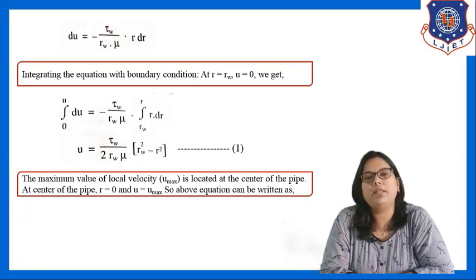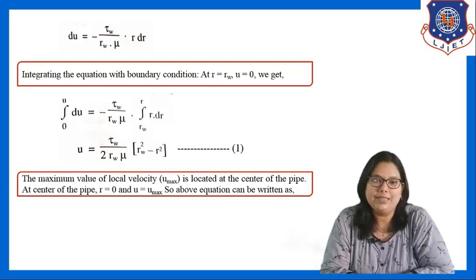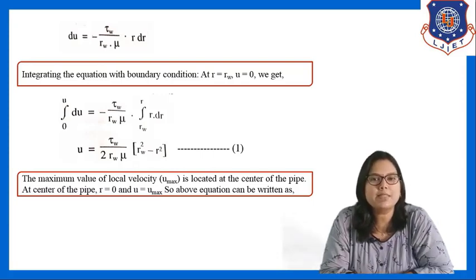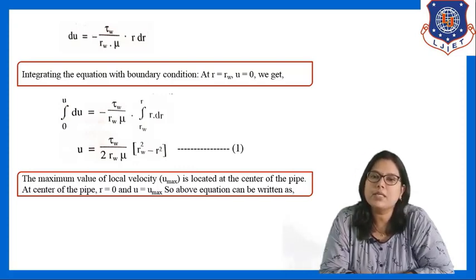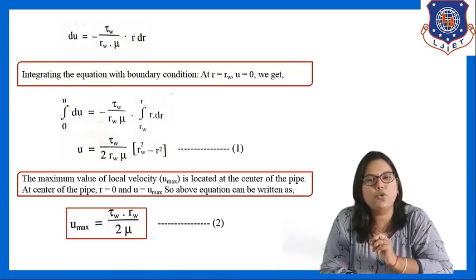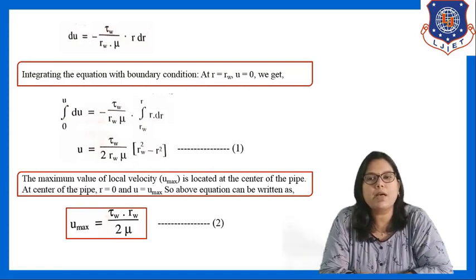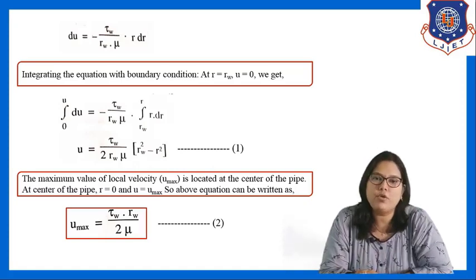For maximum velocity u_max, the velocity is maximum at the centre where r = 0. So at r = 0, u = u_max. Substituting r = 0 into equation 1, the term r² vanishes and one r_w cancels, giving equation 2: u_max = tau_w · r_w / (2·mu).